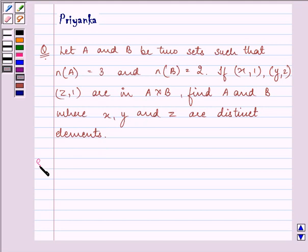Let us start with our solution. Here we are given that number of elements in set A is equal to 3. Number of elements in set B is equal to 2. Also,